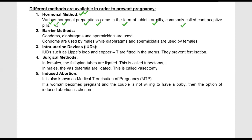The next method is the barrier method. Barrier methods include condoms, diaphragms, and spermicides. For fertilization to occur, sperm must reach the ovum. Barrier methods physically stop the sperm in the female reproductive tract and prevent them from reaching the egg. Condoms are used by males, while diaphragms and spermicides are used by females.